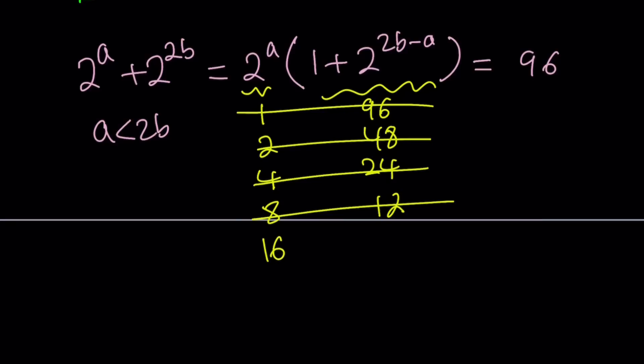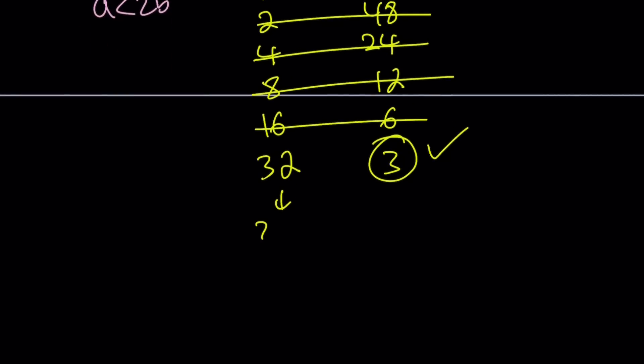And I'm kind of doing brute force here. 16 and 6, 6 is not 1 more than a power of 2. And finally, when 2 to the power of a is 32, this is going to be a 3, which is 1 more than a power of 2. Yay, it works. And this indicates the same thing. a is 5 and b is 3, if you plug it in.